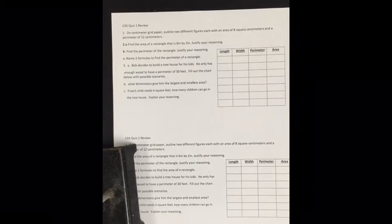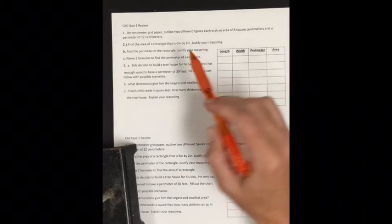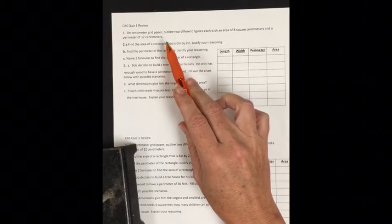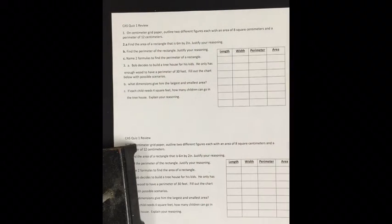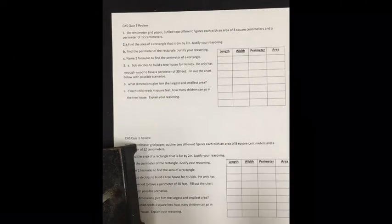Today I'll be going over CAS quiz 1 review. It says on centimeter grid paper, outline two different figures, each with an area of 8 square centimeters and a perimeter of 12 centimeters. So there are tons of answers for this. There's no one or two correct answers.